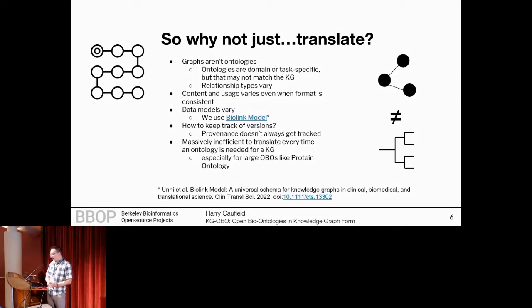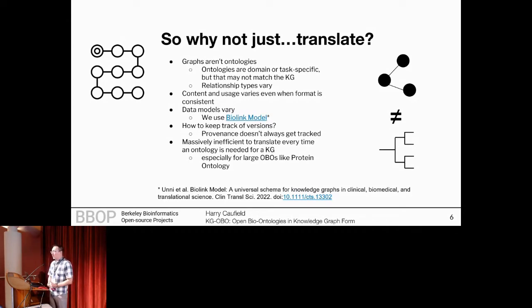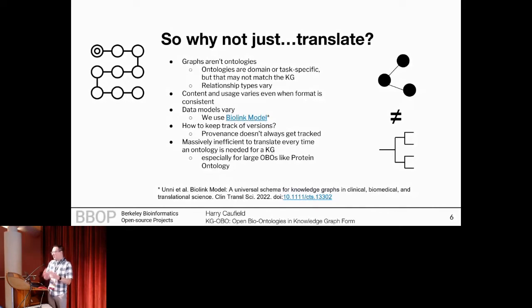Even at the same time, we know that data models vary. We heard a little bit about the BioLink model earlier, and that's in fact what I'm using in this project. But that doesn't solve a couple of the other problems, like how do we even keep track of versions? We know there are different versions of ontologies and different versions of knowledge graphs, but we don't always track the exact provenance. It's not always easy to get to the older version of a particular ontology, even if you've transformed it a couple of times. It's also massively inefficient to translate every time you need an ontology to be added to a knowledge graph. If you're working with something like NCBI taxonomy, you really shouldn't need to translate that into a graph structure every single time you want to use it, or same for something like protein ontology.